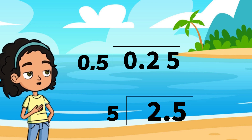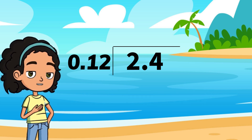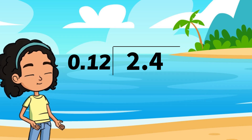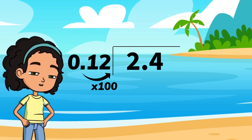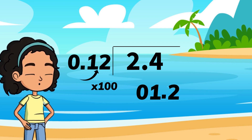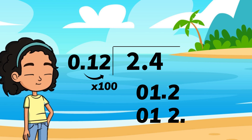Let's practice this some more. You are going to make twelve hundredths into a whole number by moving two places over, multiplying by a hundred. One, two. Your new number is two.